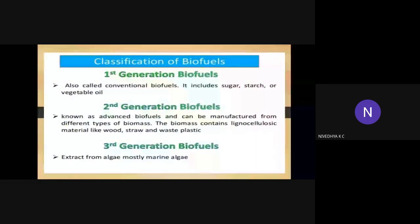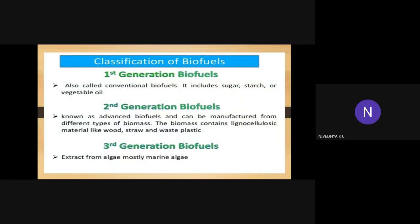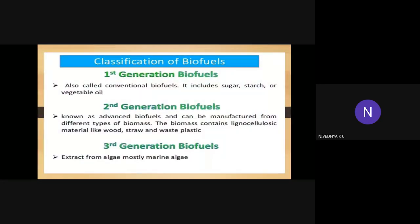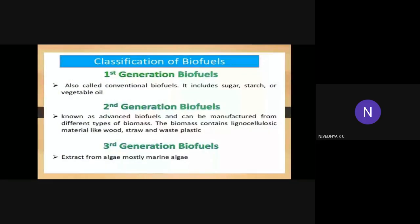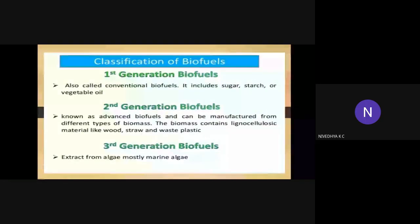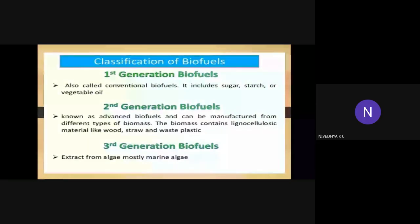Third-generation biofuels — this kind of biofuel is extracted from algae, mostly marine algae. Marine algae means algae which lives in water. Classification of biofuels: first-generation biofuels are extracted from sugar, starch and vegetable oil; second-generation from wood, straw and waste plastic; and third-generation from marine algae.